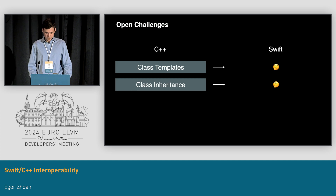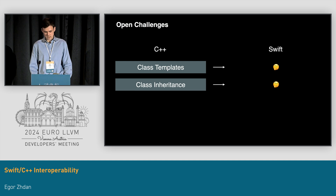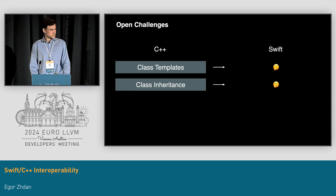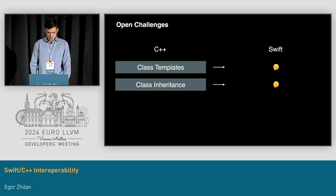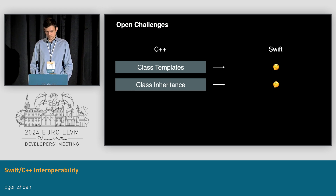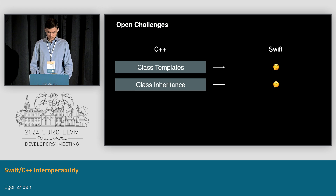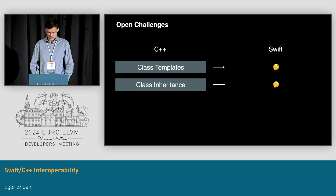This project isn't fully complete yet — we have some open challenges that we still need to tackle. One of them is mapping C++ class templates to Swift, since C++ templates are fundamentally different from Swift generics, which makes it difficult to map them to one another. Another open question is how we should map C++ class inheritance to Swift: Swift structs don't support inheritance, Swift classes support inheritance but not multiple inheritance, which is often used in C++.